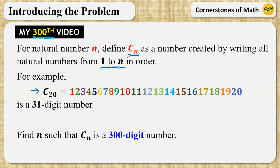C20, which is 1, 2, 3, 4, 5, 6, 7, 8, 9, 1, 0, 1, 1, 1, 2, 1, 3, 1, 4, 1, 5, 1, 6, 1, 7, 1, 8, 1, 9, 2, 0, is a 31-digit number.